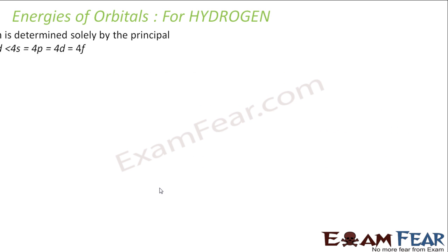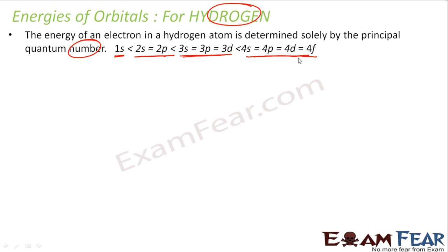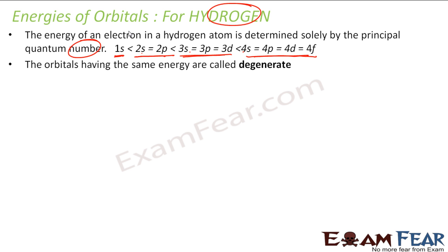Let's understand the energies of orbitals for hydrogen — please note, solely for hydrogen. In hydrogen, the energy is determined only by the principal quantum number. So 1s will have the least energy, all 2s and 2p will have equal energy, all 3s, 3p, 3d will have the same energy, and 4s, 4p, 4d, 4f will have the same energy, but 4 will be more than 3, 3 more than 2, and so on. This is only for hydrogen, not for multi-electron atoms.